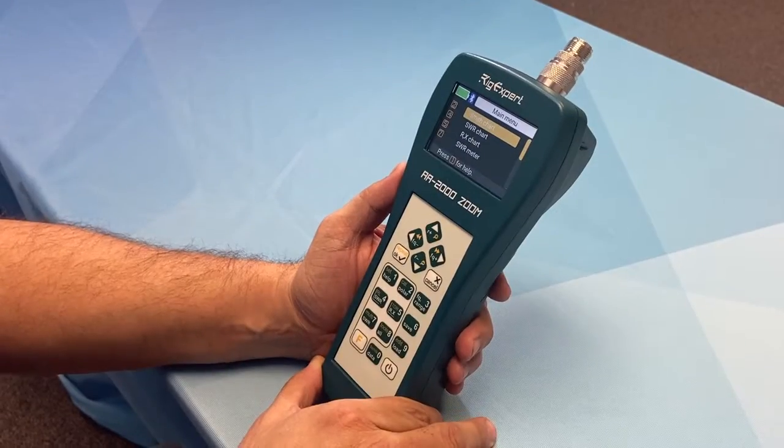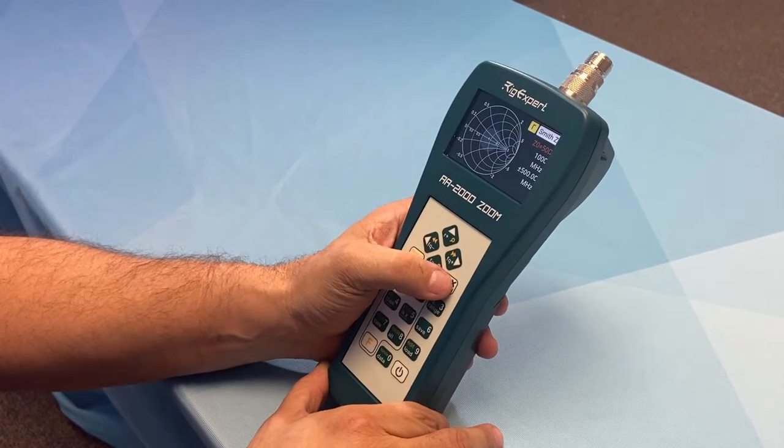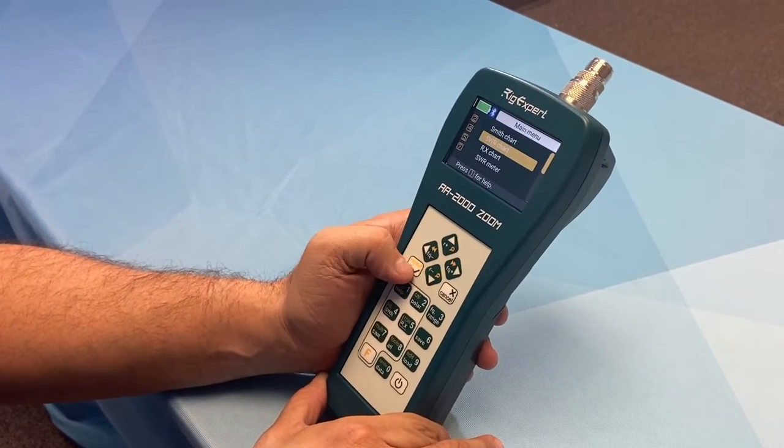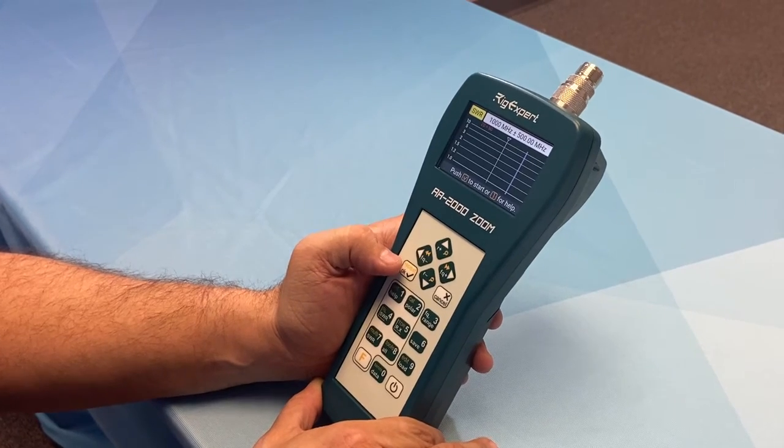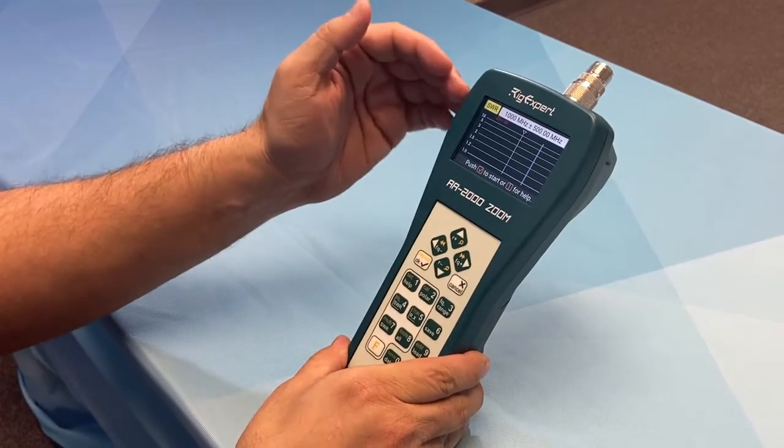So some of the features of the AA-2000 Zoom. You have the first one being the Smith chart, an SWR chart, which with the software, it will do the same thing. So you can actually tell it what frequency.